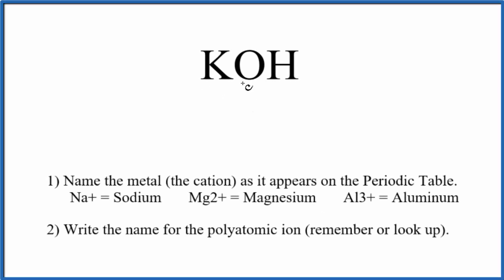To write the name for KOH, the first thing we need to realize is this OH right here is bonded to a metal. This is the polyatomic ion, it's called the hydroxide ion.